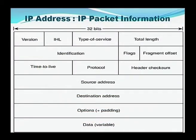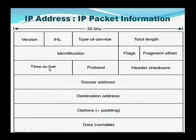Here is the format in which the internet provides information from transmitter to receiver. There are various segments: it contains version, IHL, type of service, total length, identification, flags, fragment offset, time to live, protocol, header checksum, source address, destination address, and options with padding, followed by data.